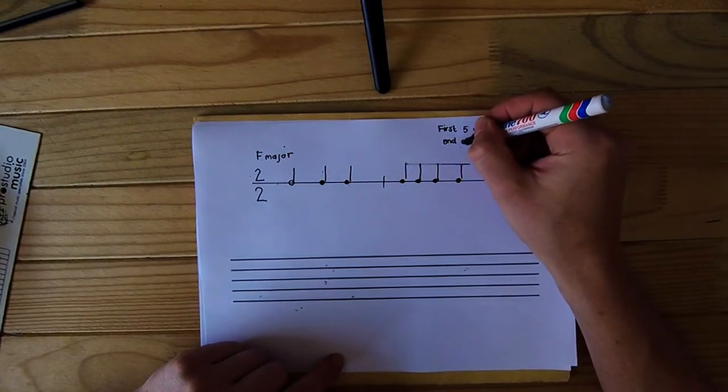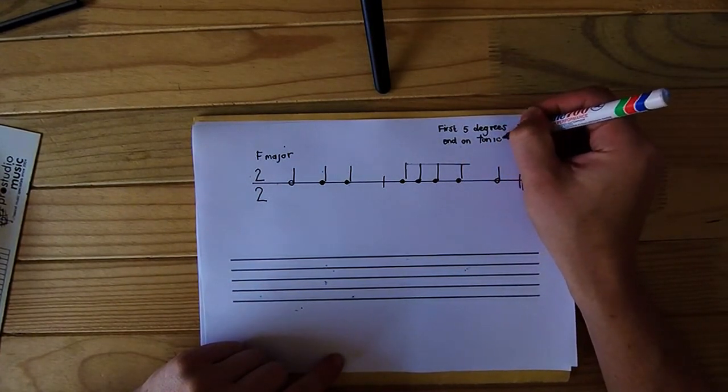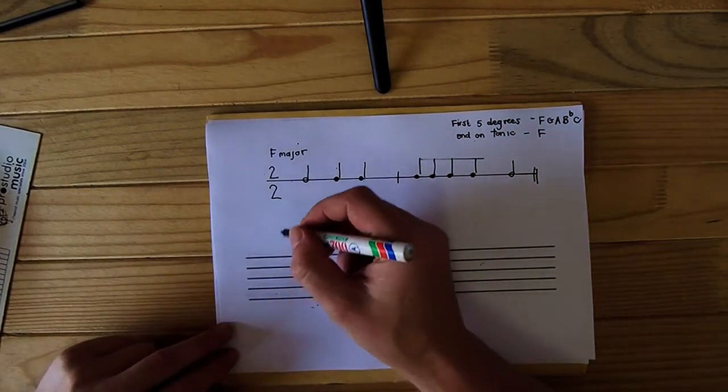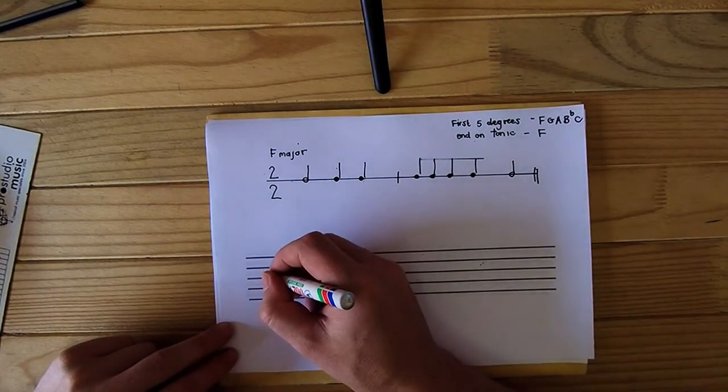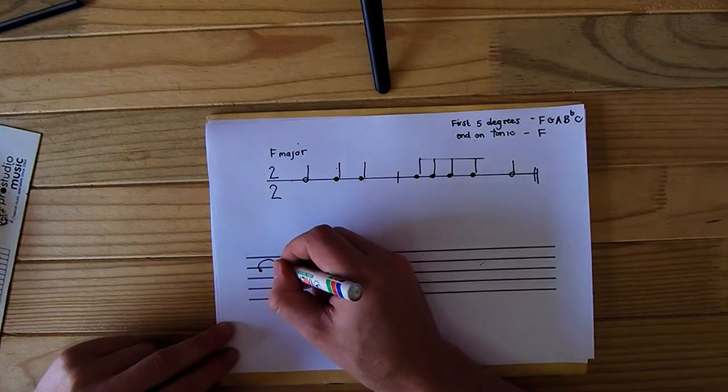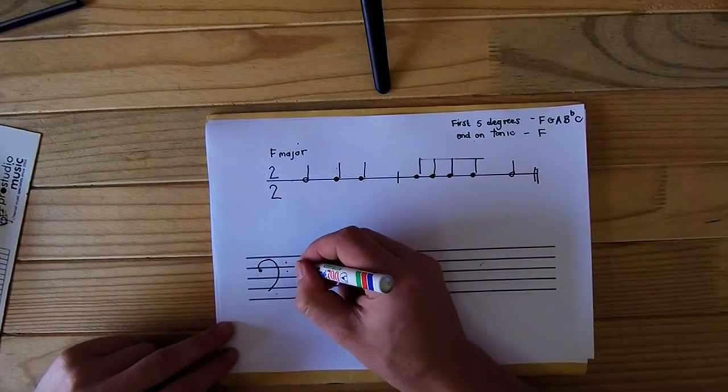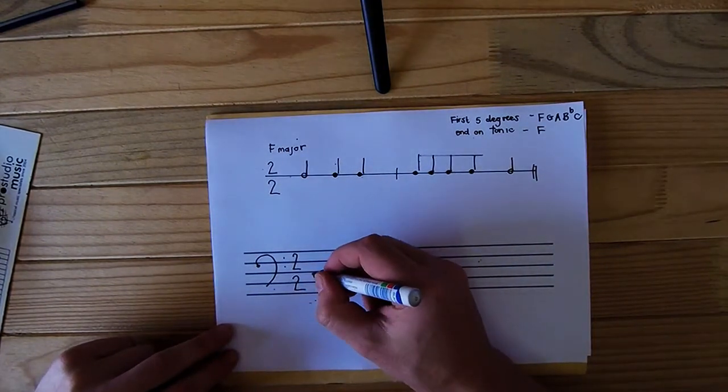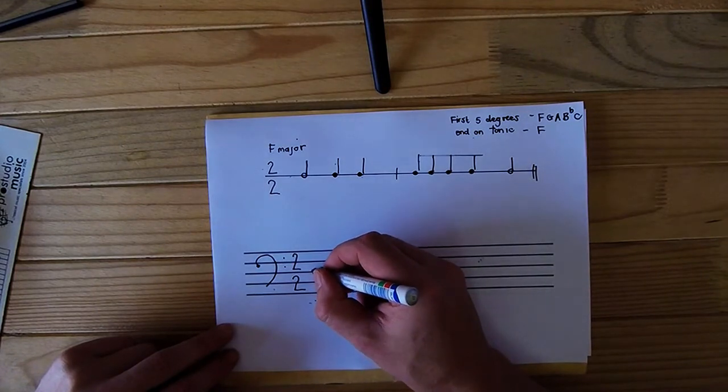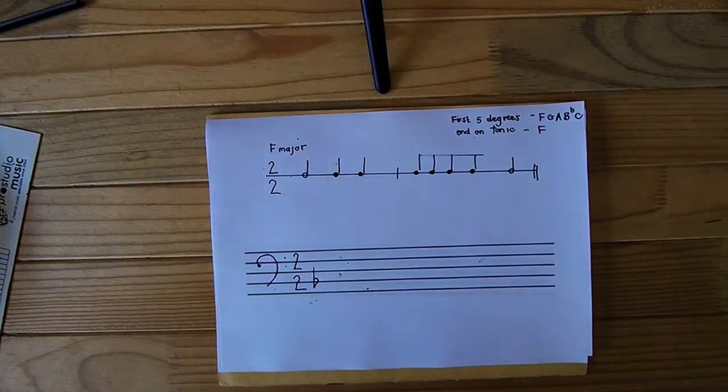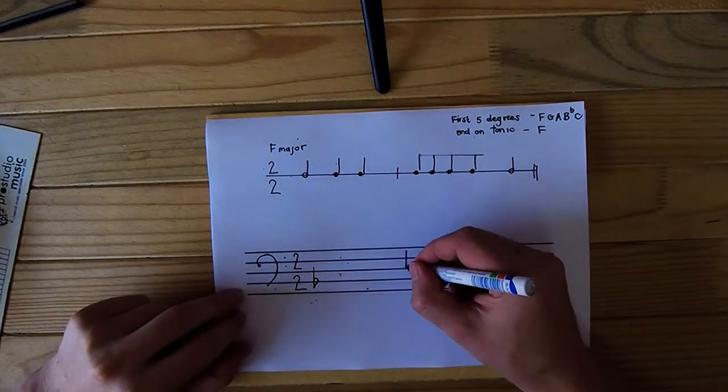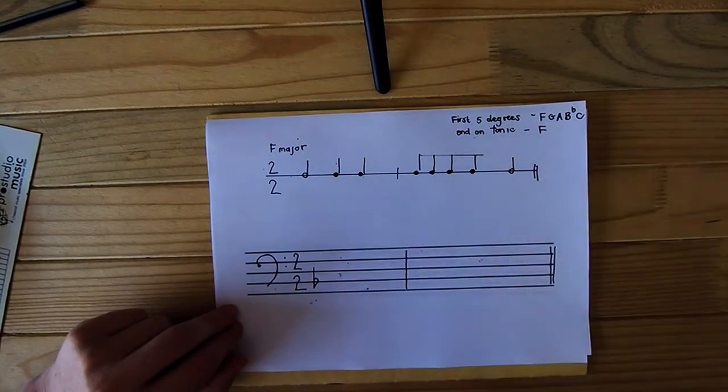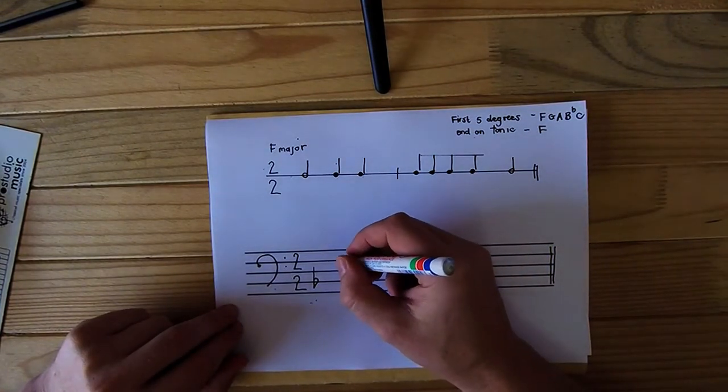And then we need to again end on the tonic, which in this case is F. So now what we need to do first is we need to write our clef sign. In this case they have given us the clef sign, which is the bass clef. We need to write our time signature, and then we need to add the key signature. They say use key signatures, so in this case it's going to be the B flat in front. Now we don't need to worry about the flat. And now we are going to write our rhythm. Let's start on the tonic. It's good to start on the tonic. Let's start on F.